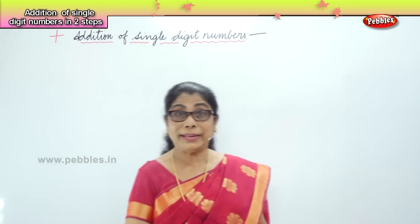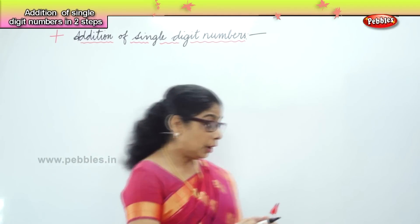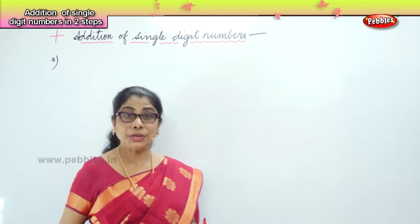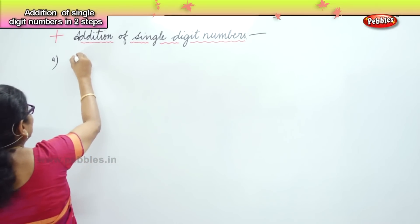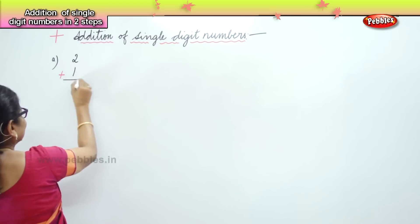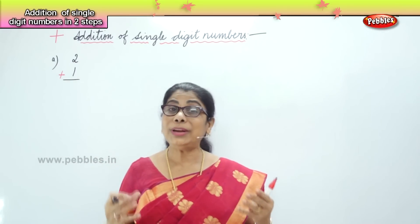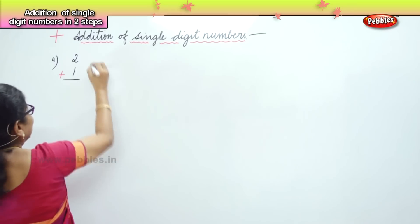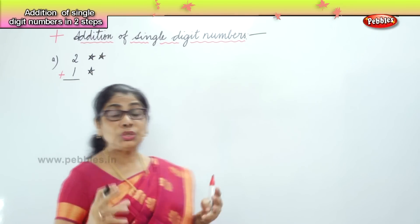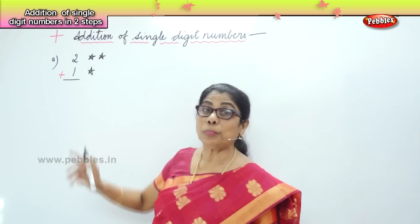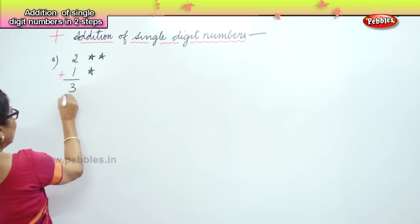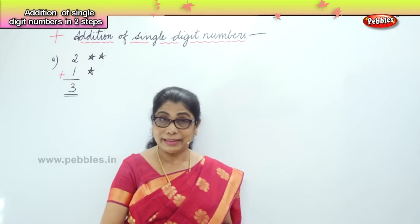Addition is always very interesting. Now just look — we're going to do single digit. Suppose I say 2 plus 1. You learn to count 2, and what do we have? Let's say you have two stars plus one star. 1, 2, 3 — 2 plus 1 is 3.